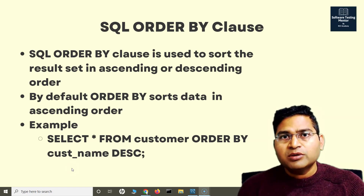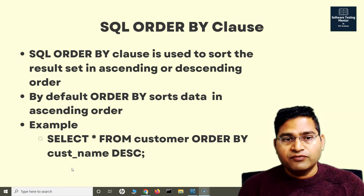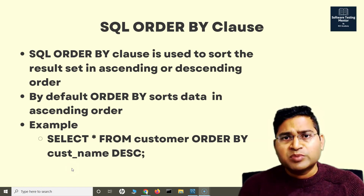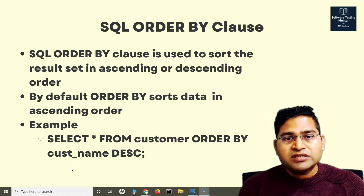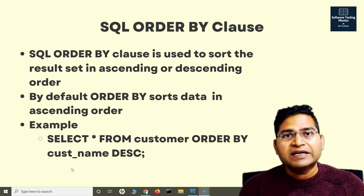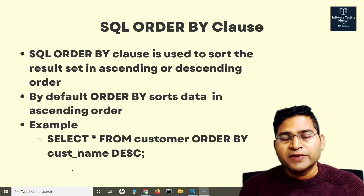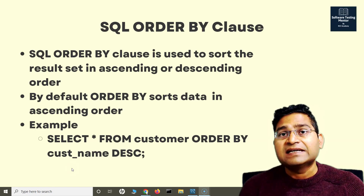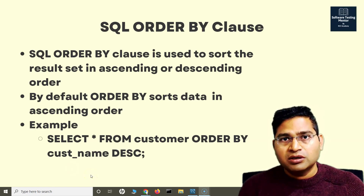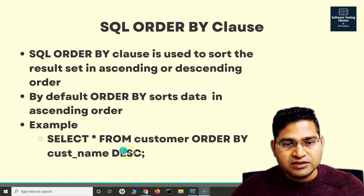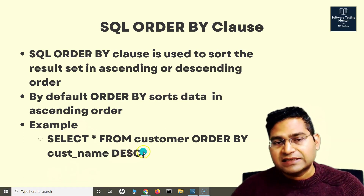By default, ORDER BY sorts data in ascending order. So even if you don't specify ascending or descending in your query and just say ORDER BY a particular column, it will order the values in that column in ascending order. If you want to sort in descending order, you have to specify DESC. So DESC is for descending and ASC is for ascending.